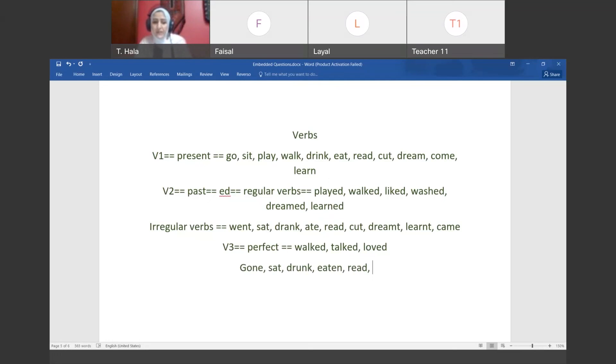The third form of verbs, which is past participle or in the case of the perfect tense. This we use in more advanced grammar rules later. If the verb is regular in the past, takes E-D, it stays E-D in the third form. Meaning walked, talked for example, loved - it stays as it is, regular. But if it was irregular, it might stay as it is, or it might change to a third form. Like go - he goes - went - gone. Sit - sat - sat. Drink - drank - drunk. Eat - ate - eaten. Read stays as it is but the pronunciation becomes red.